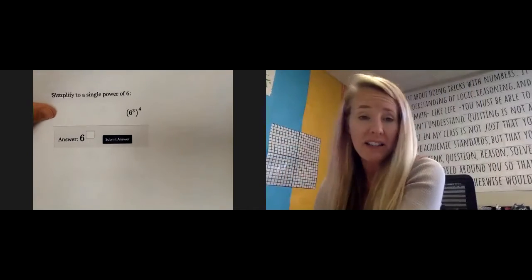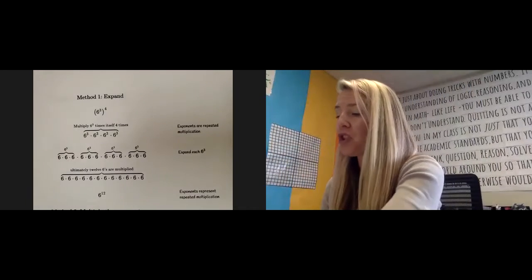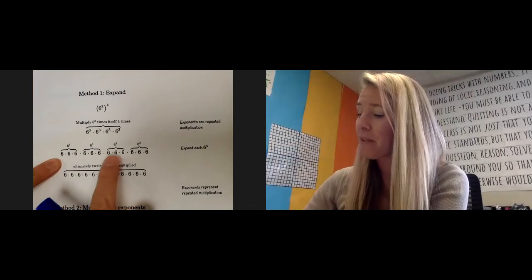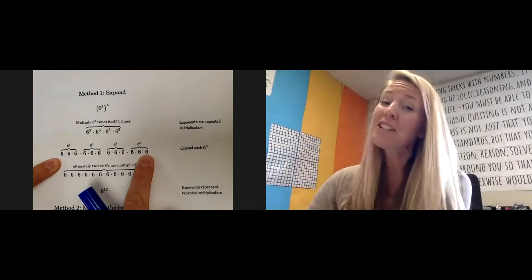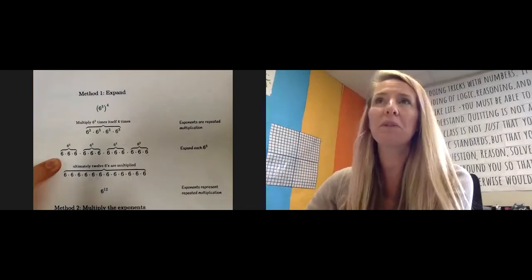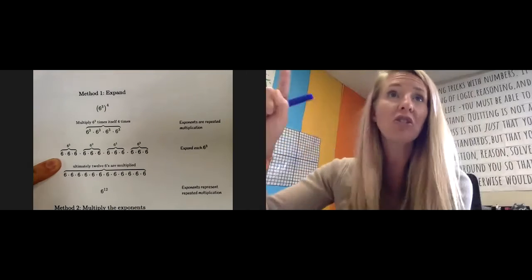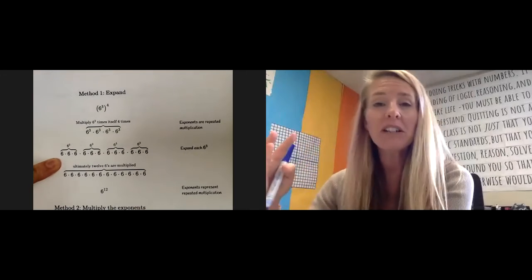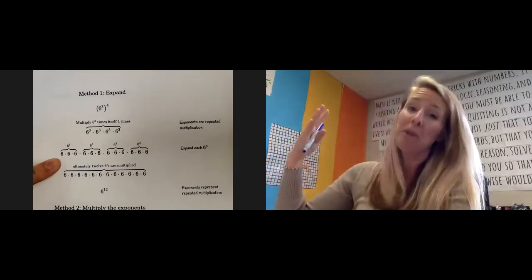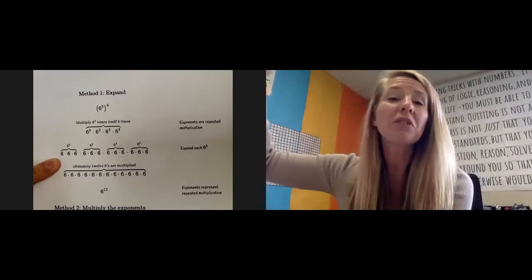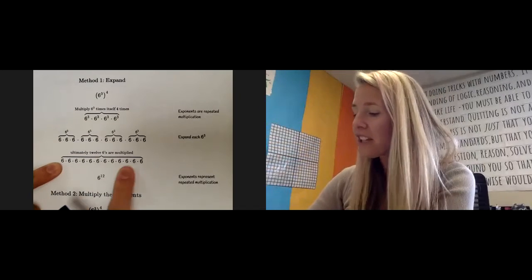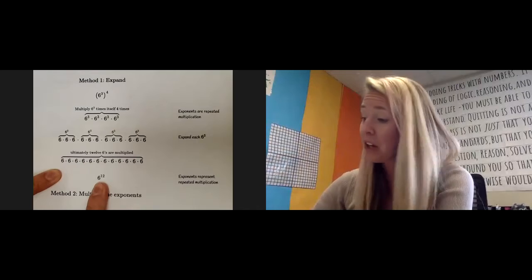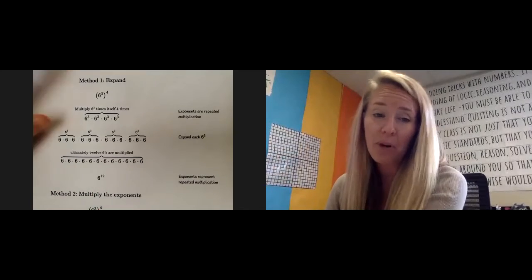So if you were to write it out, and again, method one sort of shows that with you saying, all right, 6³ happening four times, those numbers get big fast. That's why when you hear people say things like exponentially, or it changed exponentially, that means like things are happening fast. Numbers are getting really big, really fast, or really small, really fast. All together, you can see and count there are 12 sixes being multiplied at that party.